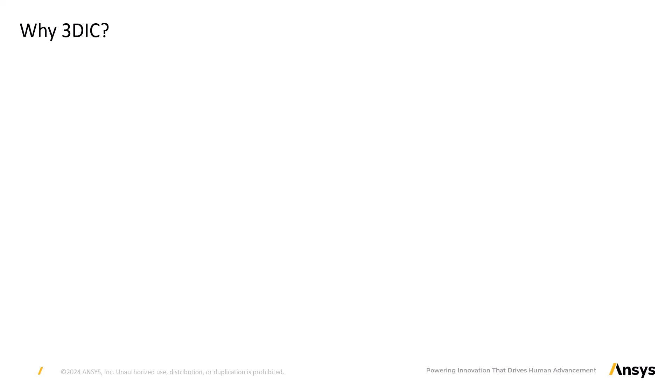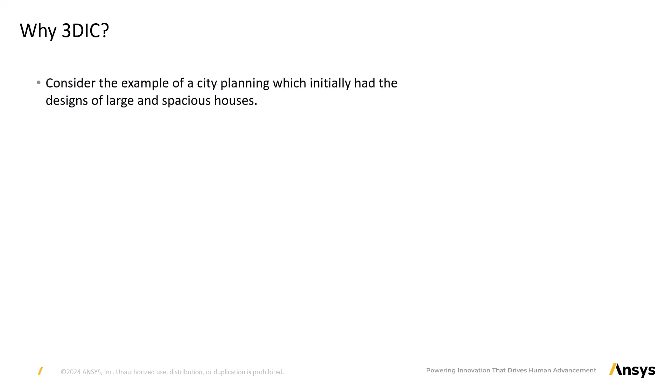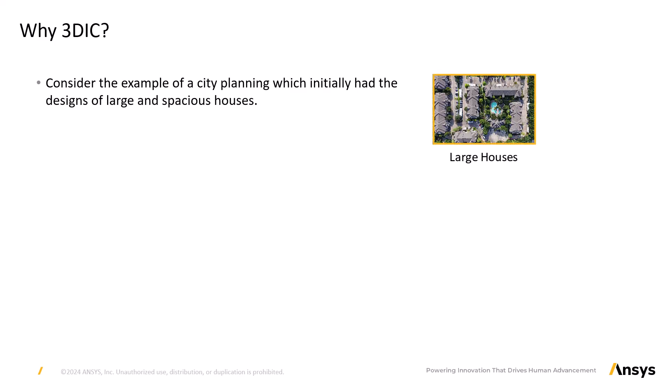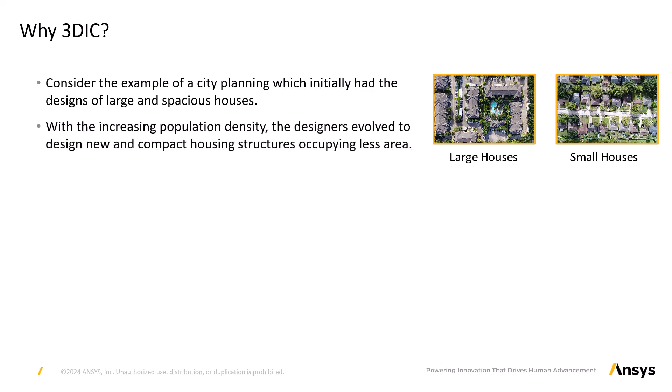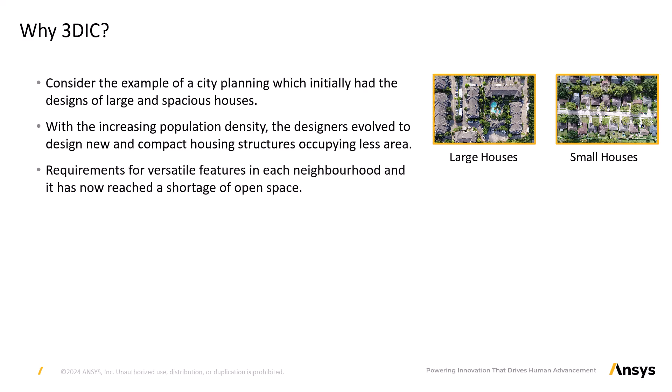Let us understand this with an example of city planning. Initially, designs featured large and spacious houses. But with increasing population density, designers evolved to design compact housing structures, allowing more houses to be built within the same area. However, even these designs struggled to accommodate increasing population density and demand for versatile features like schools, colleges, and malls, leading to a shortage of open space. The solution is a multi-storey building — that is, stacking.